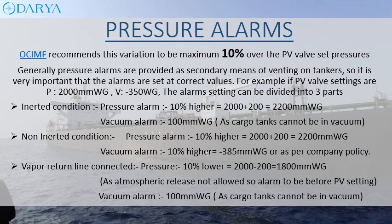OCIMF recommends pressure alarm variation to be a maximum of 10% over the PV valve set pressures. Pressure alarms are generally provided as the secondary means of venting on tankers, so it is very important that alarms are set at correct values. Examples of pressure alarm settings are given under three conditions: inerted condition, non-inerted condition, and vapor return line connected condition.